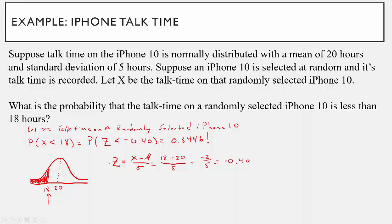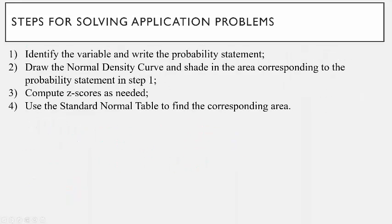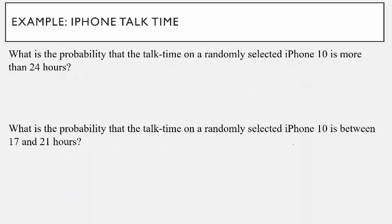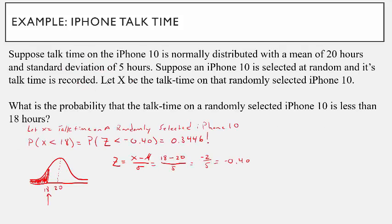Notice — just follow these four steps every time: identify the variable, write the probability statement, draw the normal curve, compute z-scores, then look up the corresponding probability on the table. Let's do two more. What is the probability that the talk time on a randomly selected iPhone X is more than 24 hours? So I want to find the probability that talk time X is more than 24 hours. That was step one — I already defined the variable, so I just rewrite the new probability statement.